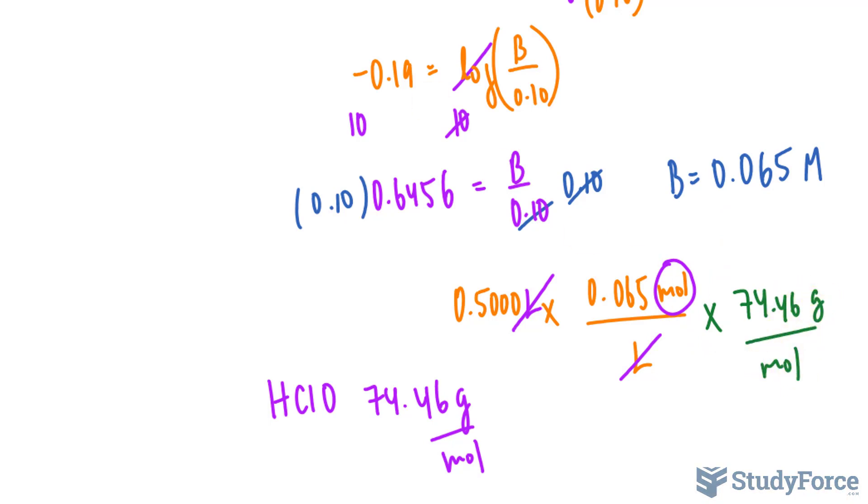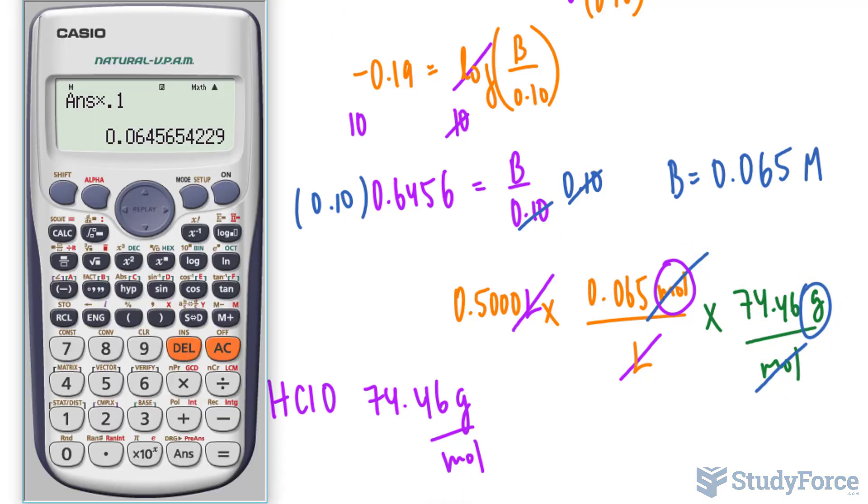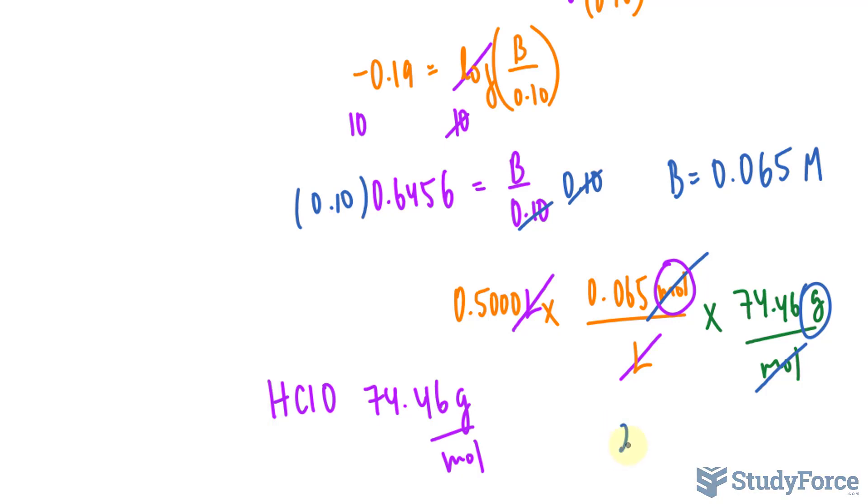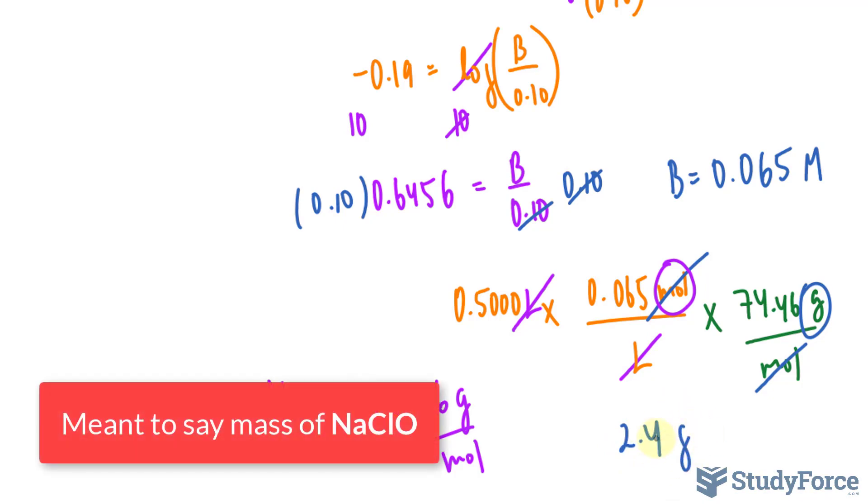And watch this, the mole units now cancel out, leaving us with the mass. Using our calculator, 0.5000, that's four significant figures, multiply to a number that is two significant figures, right there. And that's being multiplied to a number that is four significant figures. So our final answer should be rounded down to two significant figures once all of this is done. We end up with 2.4 grams of hypochlorous acid.